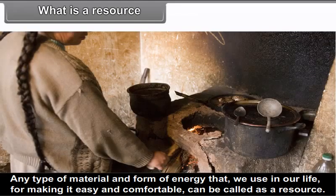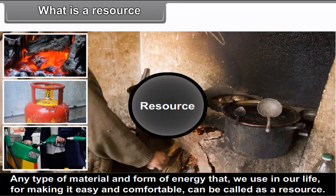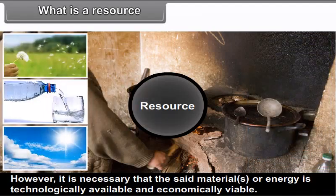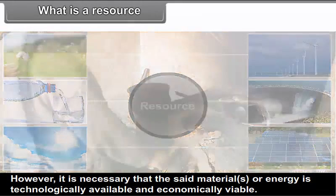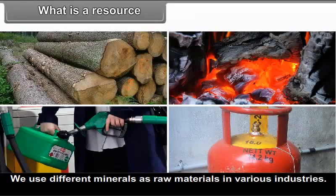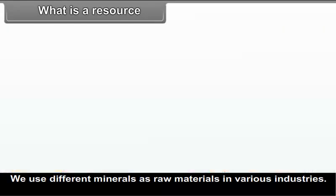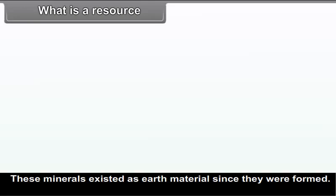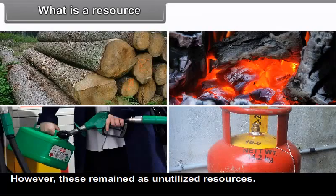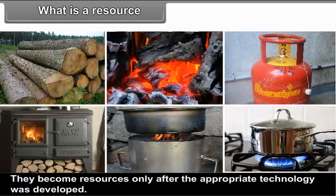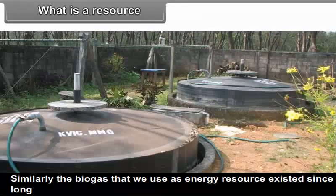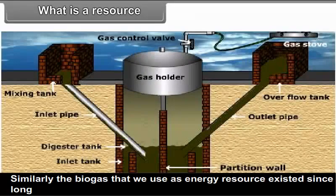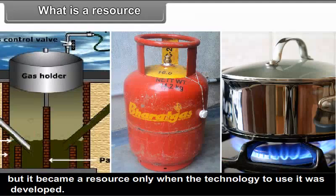What is a resource? Any type of material and form of energy that we use in our life for making it easy and comfortable can be called a resource. However, it is necessary that the said materials or energy are technologically available and economically viable. We use different minerals as raw materials in various industries. These minerals existed as earth materials since they were formed, but remained as unutilized resources. They became resources only after appropriate technology was developed. Similarly, biogas became a resource only when the technology to use it was developed.